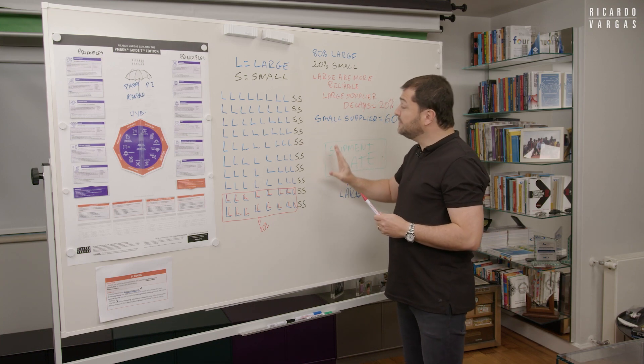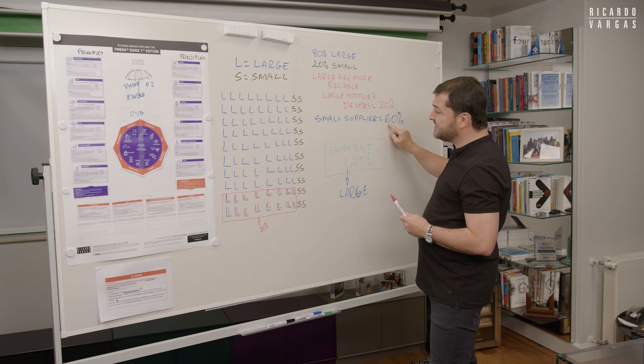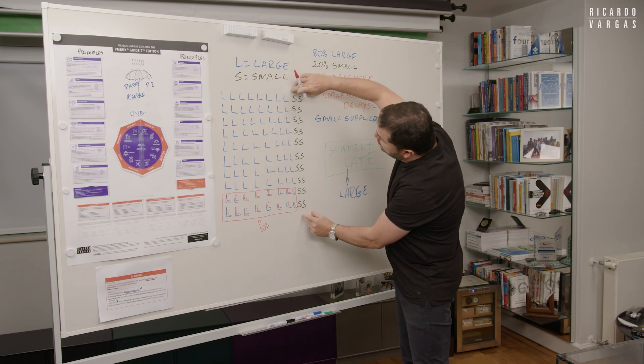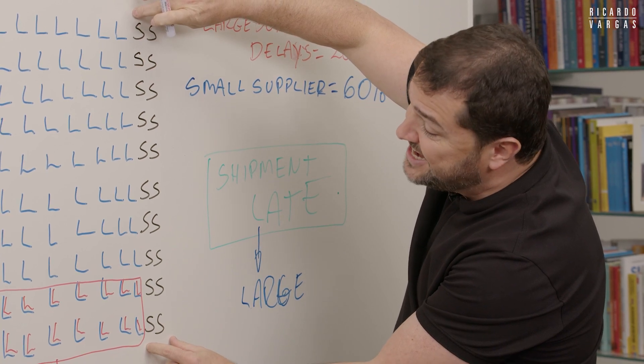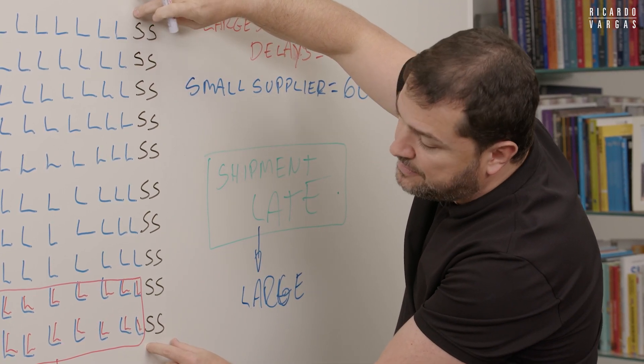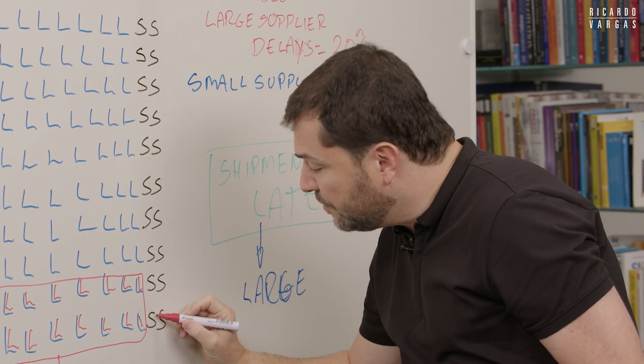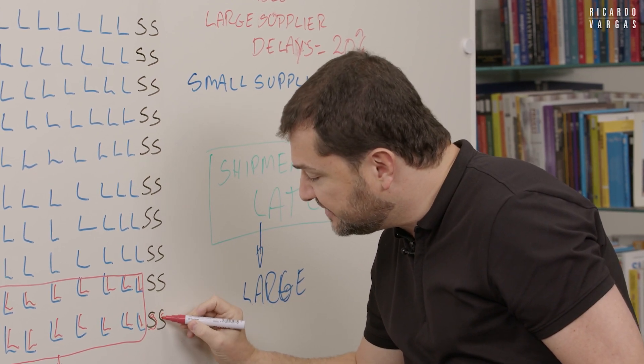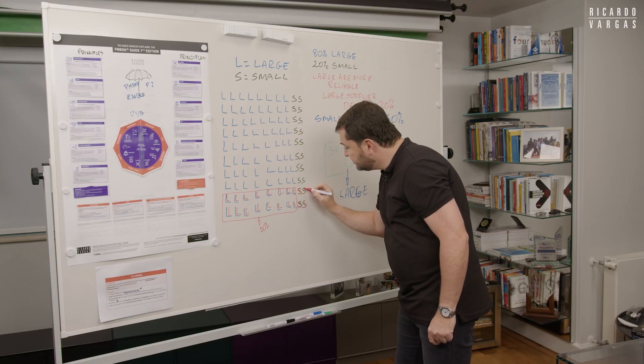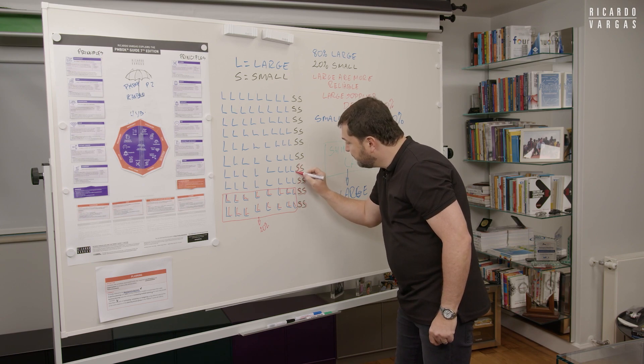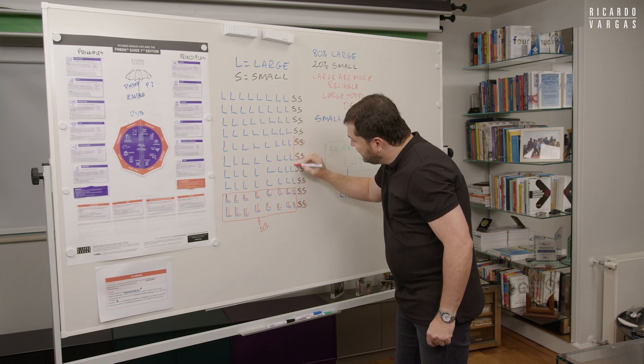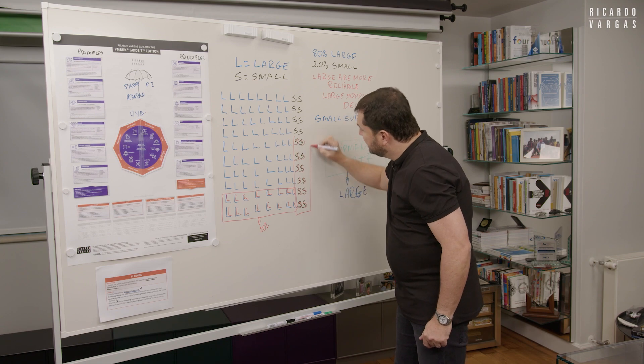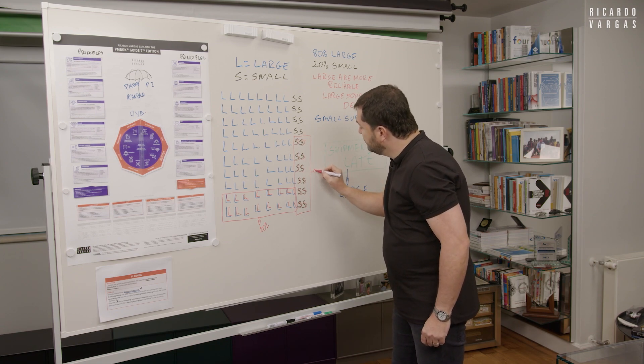Now I will do the same for small, but the small is 60%. Means out of this universe here, that is 100% of the small companies, 60% of them are late. So I will put an S here, 10%, 20, 30, 40, 50, and 60. These are 60% of the universe.